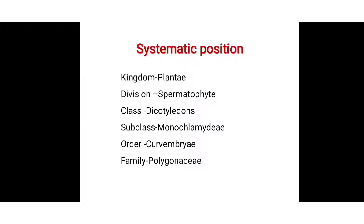In this systematic position, we discuss the characters. We must write down the two characters of each step. In the first Kingdom, Plantae, there is an autotrophic mode of nutrition because they contain chlorophyll and chloroplasts. The cell wall is made up of cellulose material, and there is no locomotion, only movement occurrence — they do not change place to place.